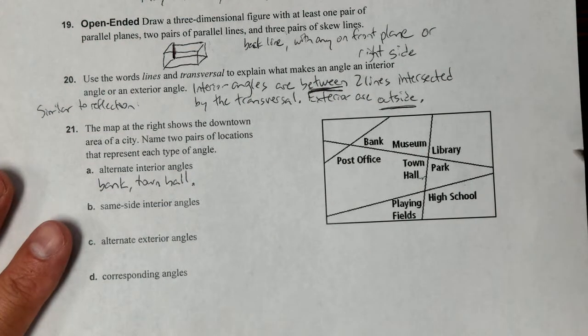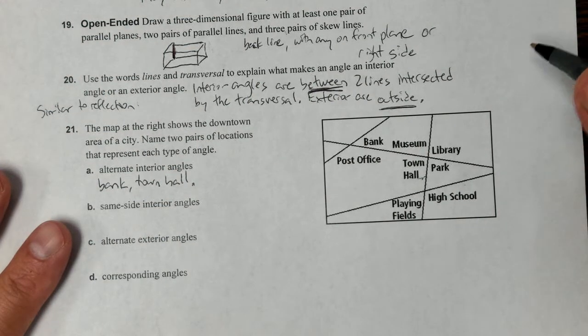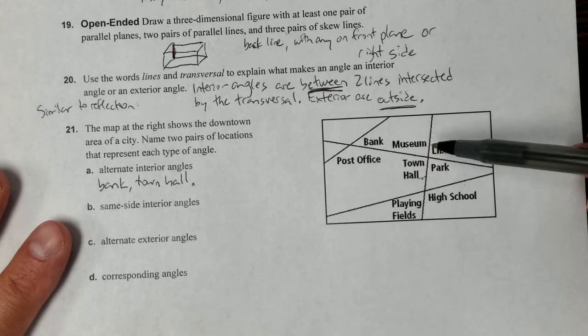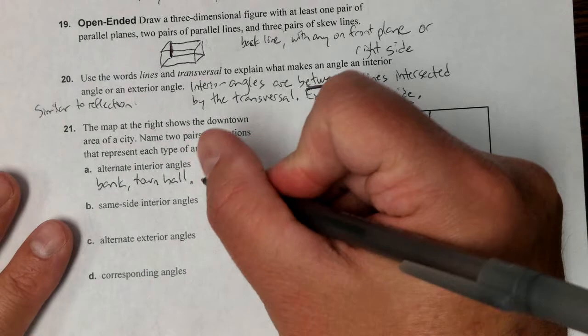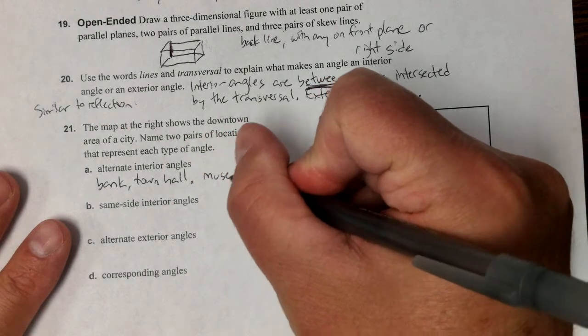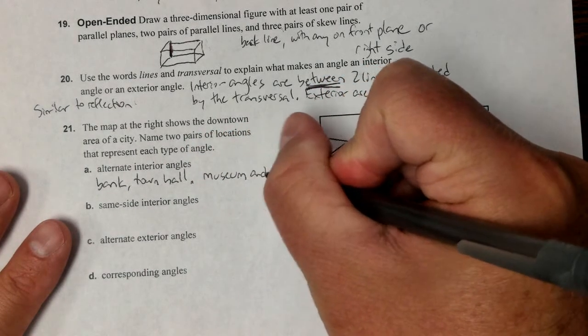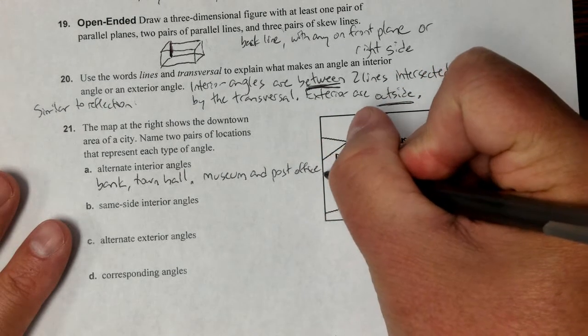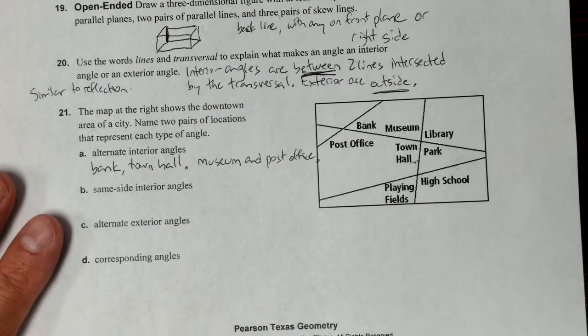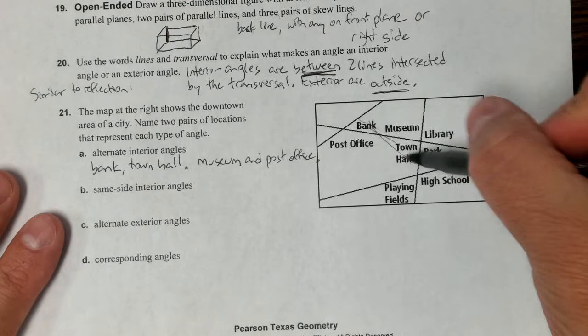Another example would be the museum and the post office. Museum and post office. So basically these and these.